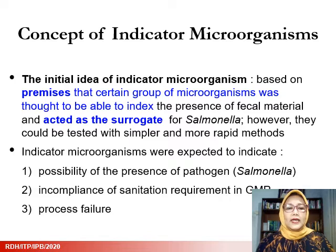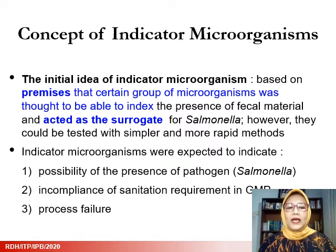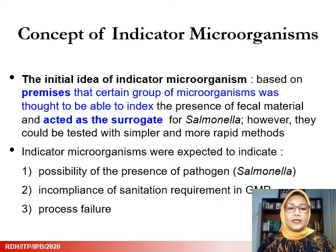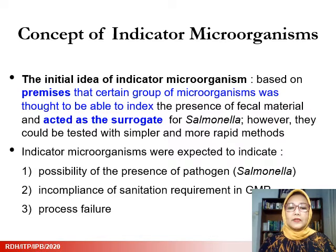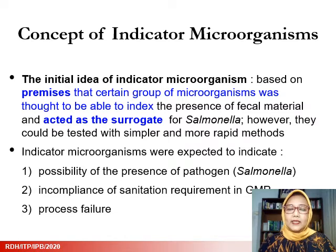The concept came about from the initial idea that a certain group of microorganisms was thought to be able to index the presence of fecal material and acted as a surrogate for pathogens such as Salmonella. However, the testing for this organism should be simpler and faster. Indicator microorganisms were then expected to indicate the possibility of pathogen presence, suggest non-compliance of sanitation implementation, as well as process failure.